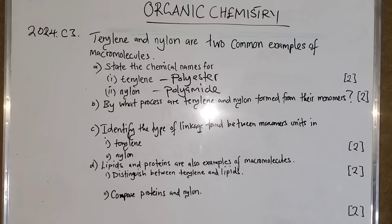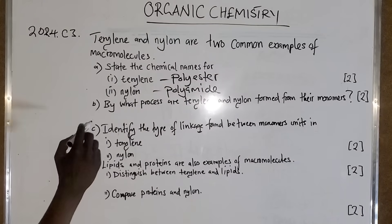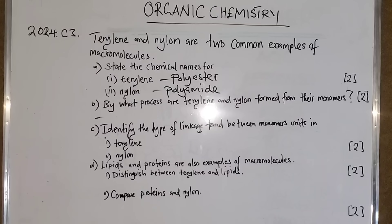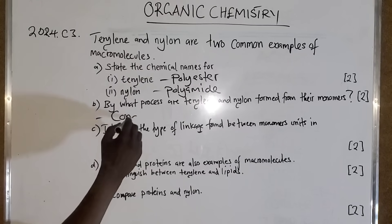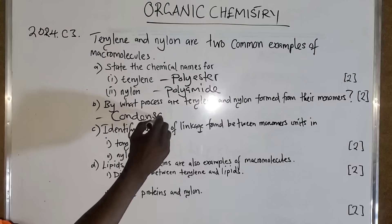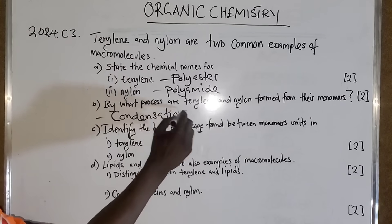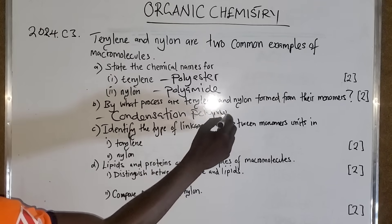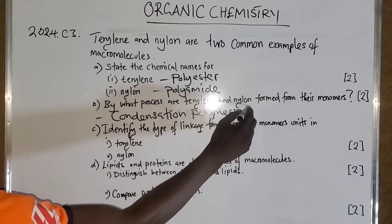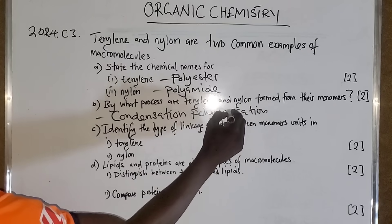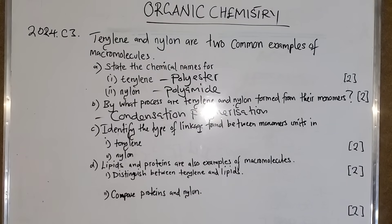By what process are terylene and nylon formed from their monomers? This is condensation polymerization. Let me just add more information to this.